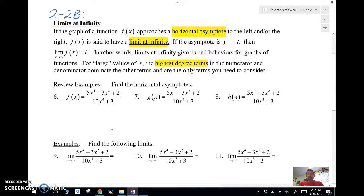Alright, so if the graph of a function f(x) approaches a horizontal asymptote to the left or to the right, that function has a limit at infinity. So the asymptote y equals l would have a limit as x approaches infinity of f(x) equals l. In other words, the limit at infinity gives us end behaviors of the graph. For large values of x, the highest degree terms in the numerator and the denominator dominate the other terms and are the only terms that you really need to consider.